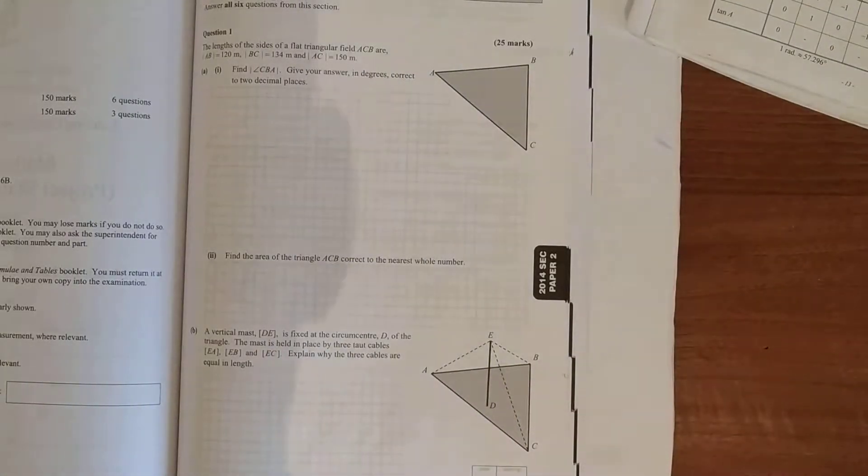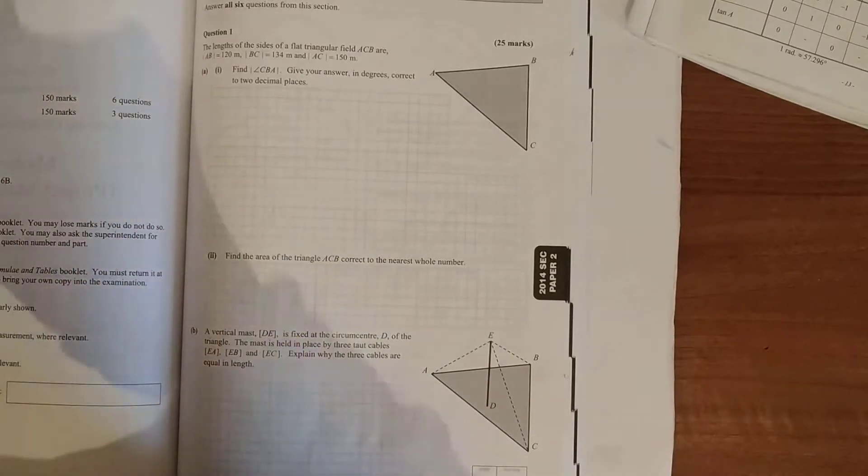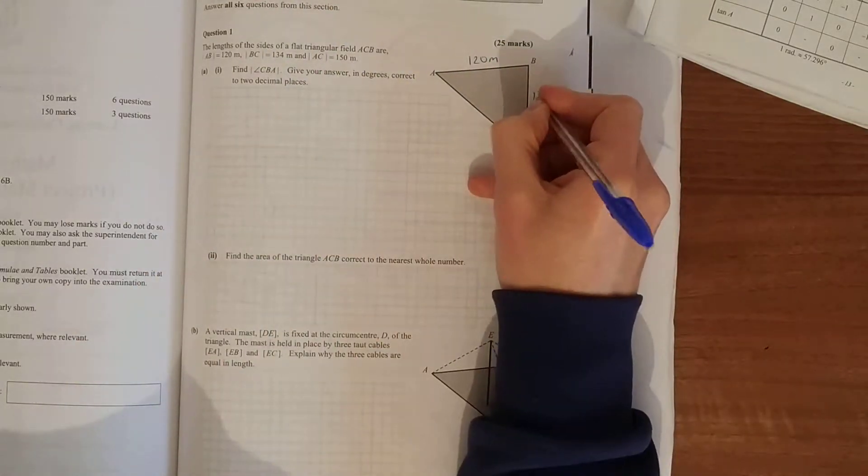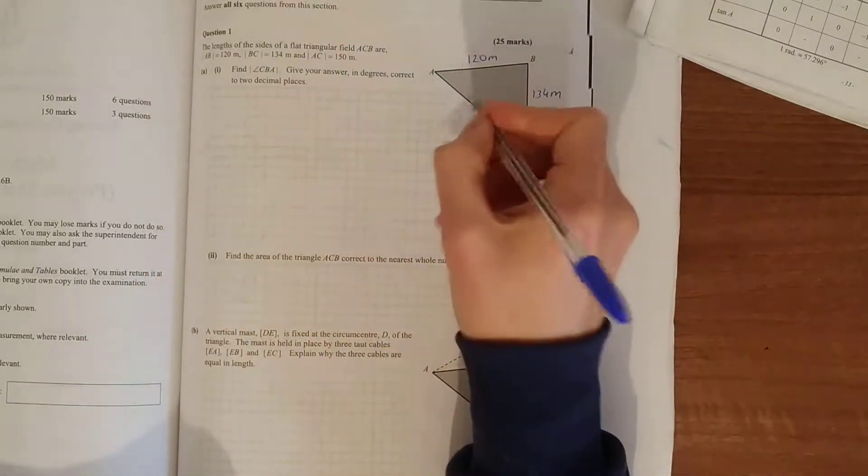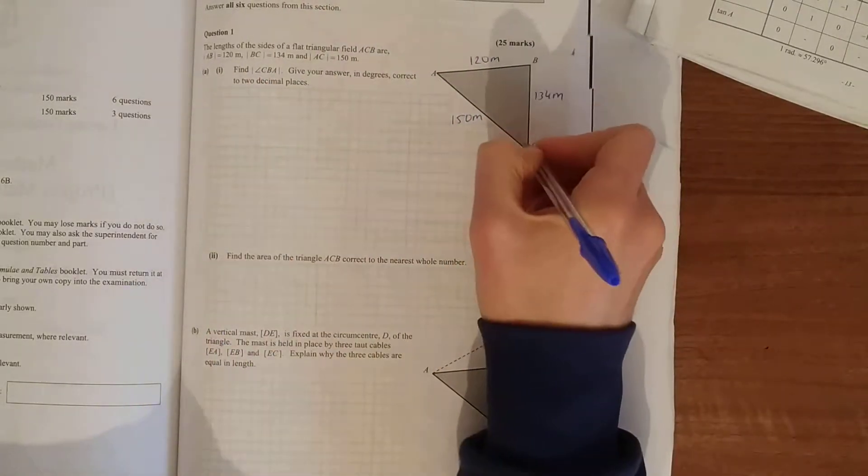In 2014, first question on paper 2 is a third question. The lengths of sides of a flat triangular field: AB is equal to 120 meters, BC is 134 meters, and AC is 150 meters. Find angle CBA.